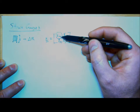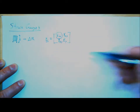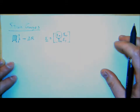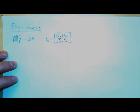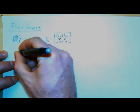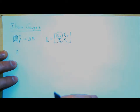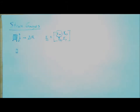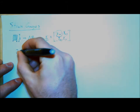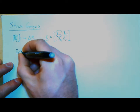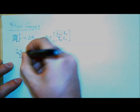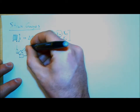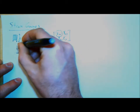Strain rosettes are normally configured either in a 0-45-90 configuration or a 0-120-240 configuration (120 degrees spaced apart). The one in the lab is a 0-45-90. So we'll have one gauge at 0 degrees, one at 45 degrees, and one at 90 degrees. Here are the important equations to know: the strain transformation equation.